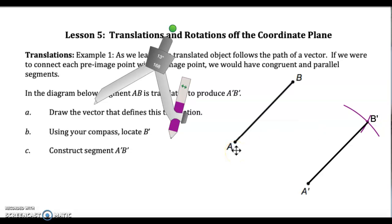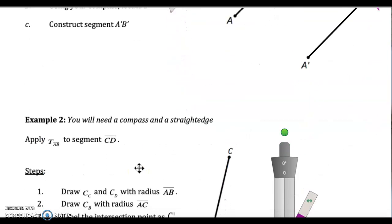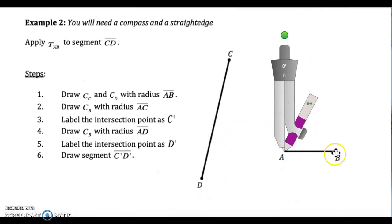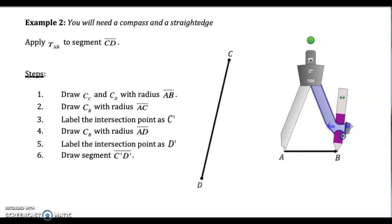Now I'm going to need my compass for example 2. Example 2 is a little bit harder. I again am taking line CD and I'm going to translate it the length of AB and the direction of AB — so I'm translating it by vector AB. That's what this is telling me to do. So the first step is I draw a circle at C and a circle at D with radius AB. I'm going to measure the length of this vector.